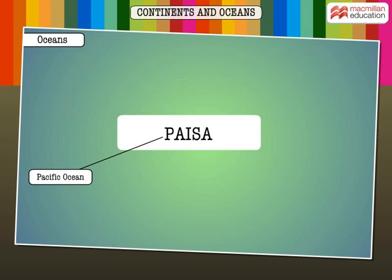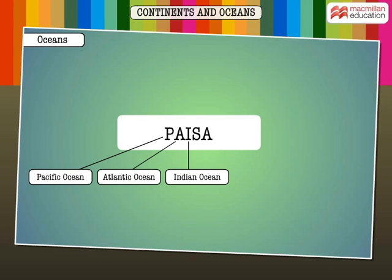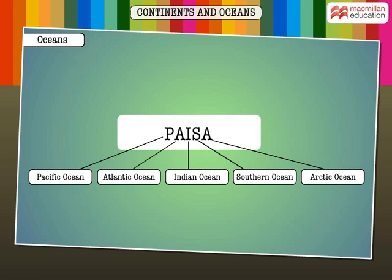It is simple to remember the five oceans by remembering the word PAISA: Pacific, Atlantic, Indian, Southern, Arctic.